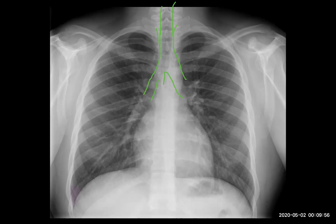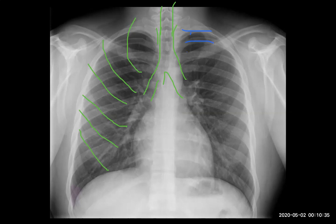For example, ribs one through six should be seen at the mid-axillary line — that is a well-inspired X-ray. As we know, the anterior ribs are more steep, and the posterior ones are more horizontal. We need to see about 10 posterior ribs — from first to ninth or tenth — in the posterior part, which are more horizontal.